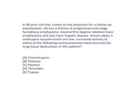Here is the case: a 28-year-old man comes to the physician for a follow-up examination. He has a history of progressive end-stage hereditary emphysema. Several first-degree relatives have emphysema and also have hepatic disease. Serum alpha-1 antitrypsin enzyme levels are low. The question asks which increased activity of the following serine proteases best accounts for lung tissue destruction in this patient.